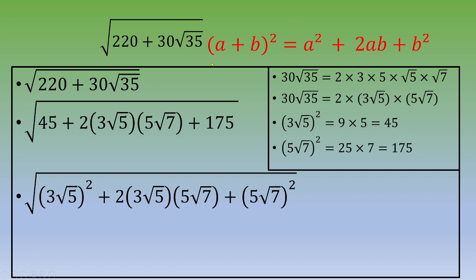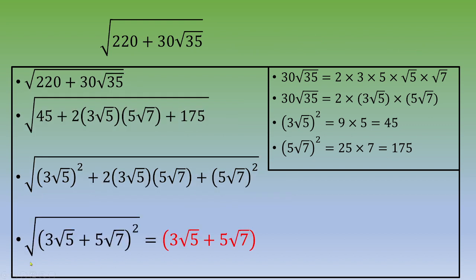According to the remarkable identity (a + b)² = a² + 2ab + b², we can conclude that the square root of (3√5 + 5√7)² equals 3√5 + 5√7. That is our final simplified answer.